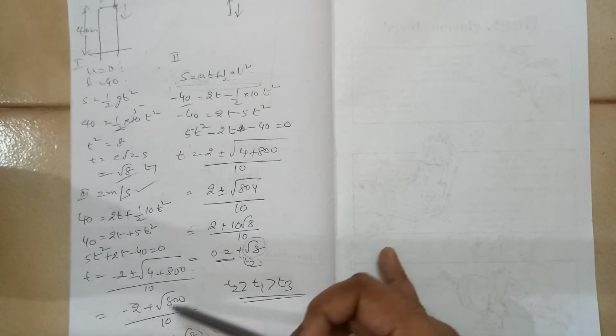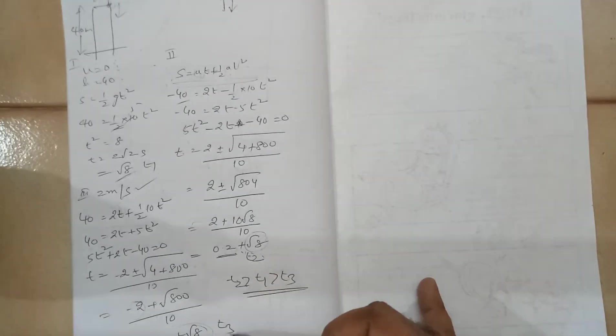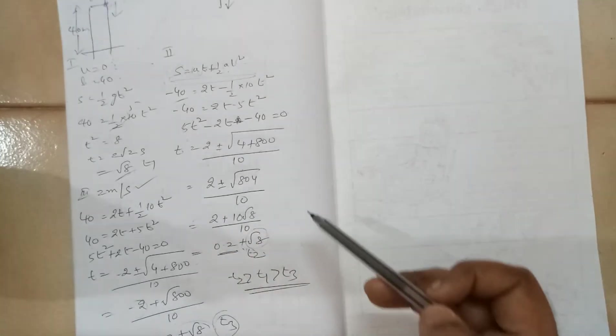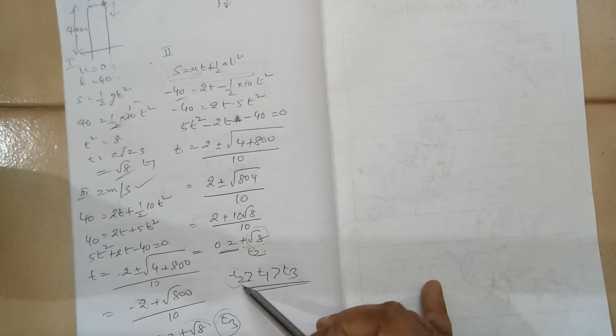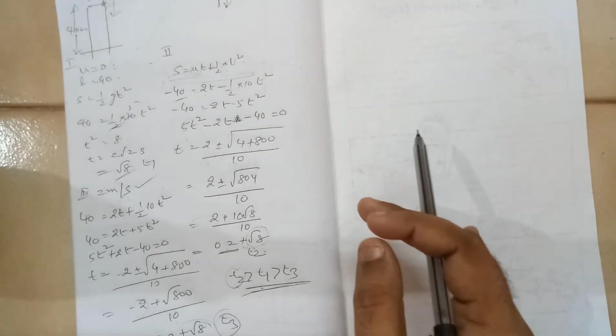So here you get minus 0.2 plus root 8 seconds. Let us say this is t3. Case 2 is t2. And case 1 is t1. So case 2, t2 is more than t1, this is more than t3. Isn't it common sense?